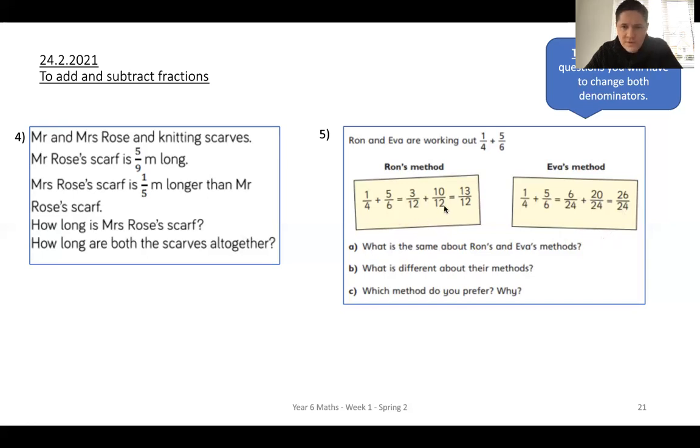What is the same about their methods? Well, what have they both done? What is different about their methods? That's pretty obvious. Which one do you prefer and why? Have a look at what they've done. Now, I'm just looking at their answers. Thirteen-twelfths and twenty-six-twenty-fourths. If I double my twelfths to get to twenty-fourths, and I double my top thirteen, double is twenty-six, I know that they're actually the same answer. They're equal. It's just that this is twelfths and that's twenty-fourths. So, they've actually got the same answer. They've just done it a different way. But which way was the most efficient way? Remember, in math, it's all about doing things the most efficient way.